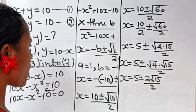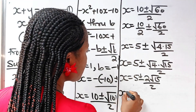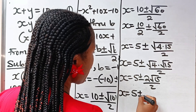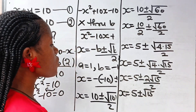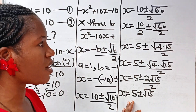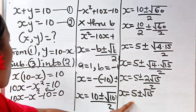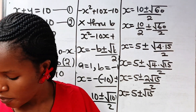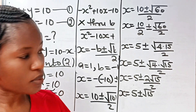So x is equal to 5 plus or minus 2 root 15 divided by 2. The 2s cancel, so x is equal to 5 plus or minus root 15. This simply means that we have two values of x.